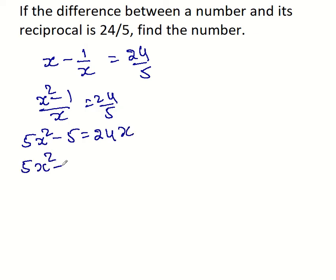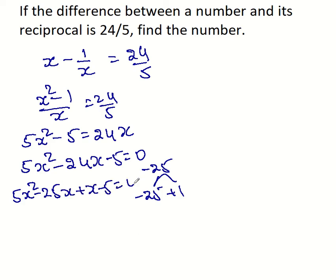5 x squared minus 24 x minus 5 equal to 0. 5 is split as 25, so minus 25. The factors we can take are minus 25 plus 1. So 5 x squared minus 25 x plus x minus 5 equal to 0.